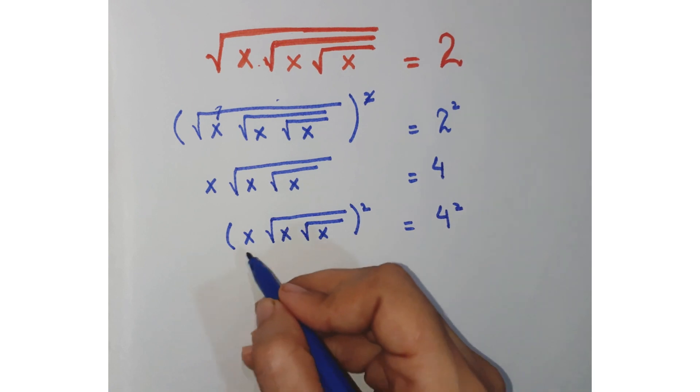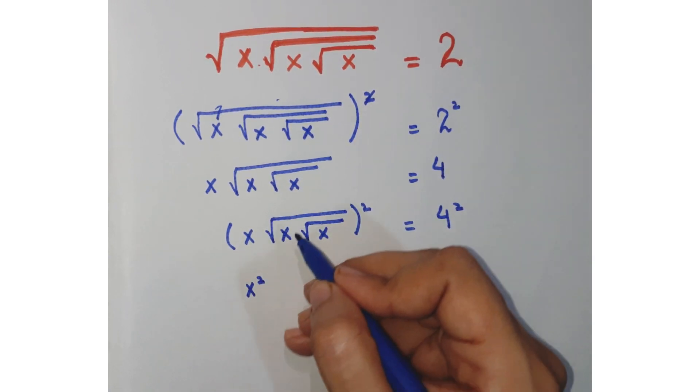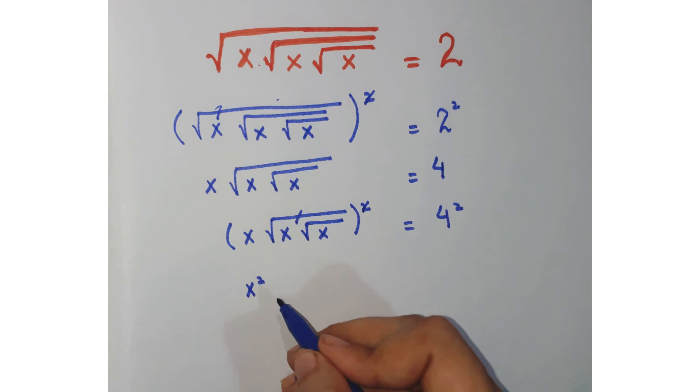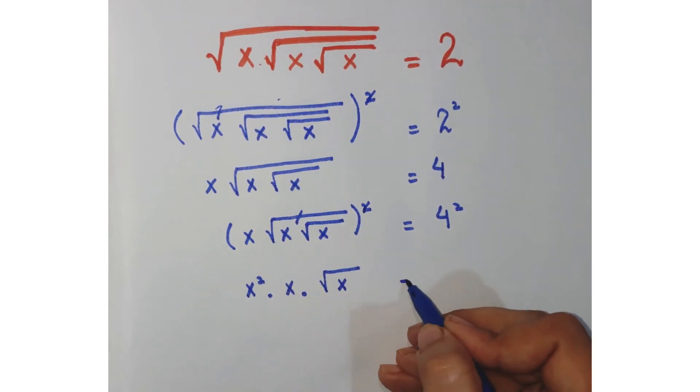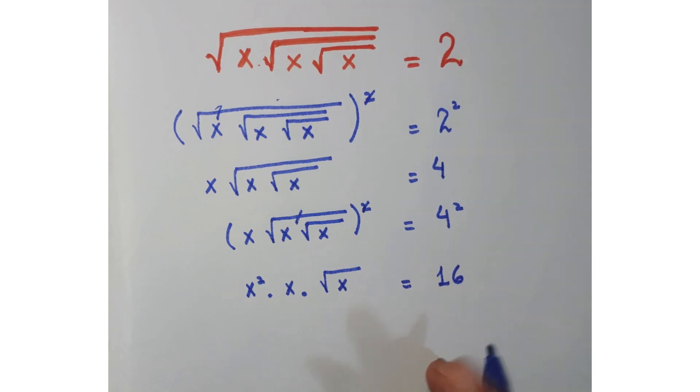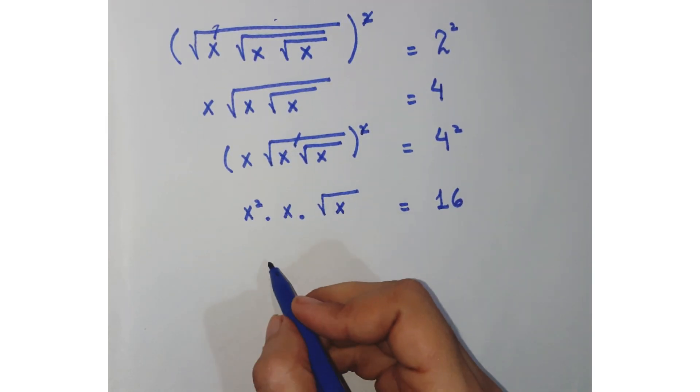What you will get here is x² (this square root cancelled with this two), you will get x and again √x equals 16. Now again square both sides.